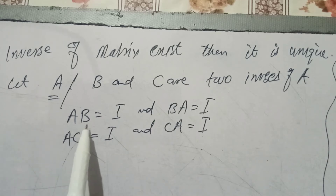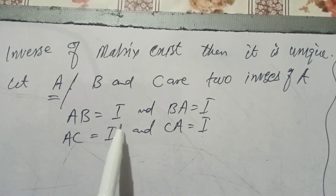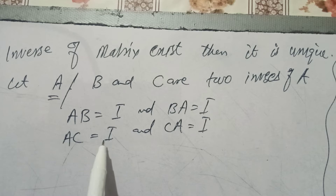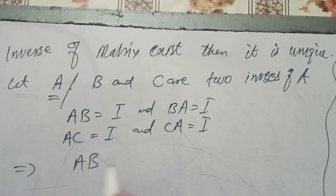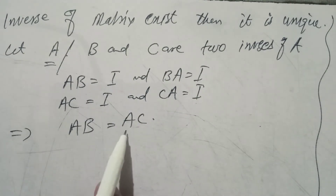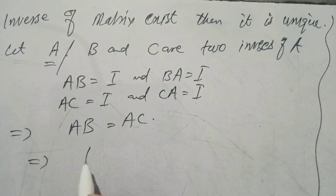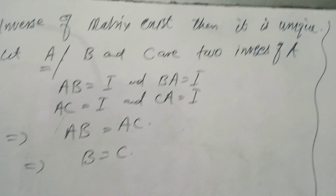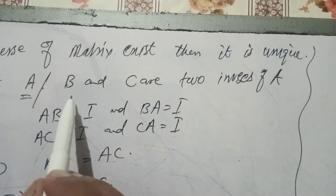We have AB equals the identity and AC equals the identity. This implies that AB equals AC, which further implies that B equals C.